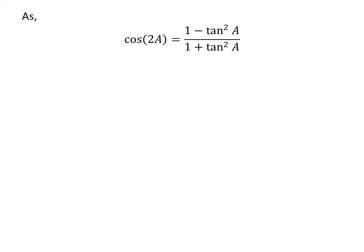To prove the identity, let us find the value of cosine of 2 times arctangent of x. We know cosine of 2 times A is equal to 1 minus square of tangent of A upon 1 plus square of tangent of A.